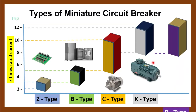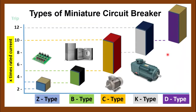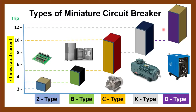The last and least sensitive type is the D-type circuit breaker, which trips the circuit whenever the current exceeds ten to twenty times the rated current. These are normally used for very high starting current appliances like welding machines, transformers, etc.